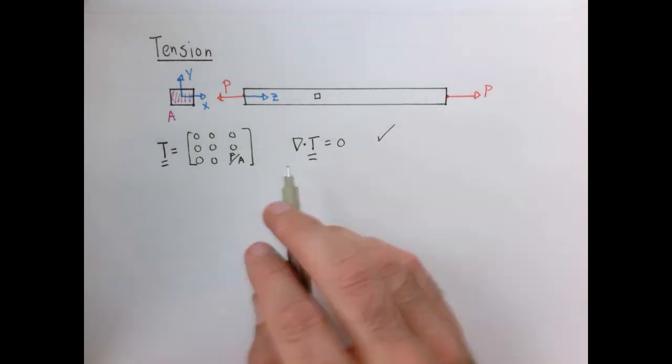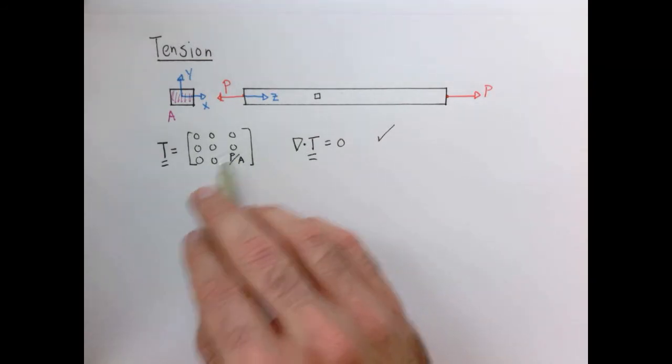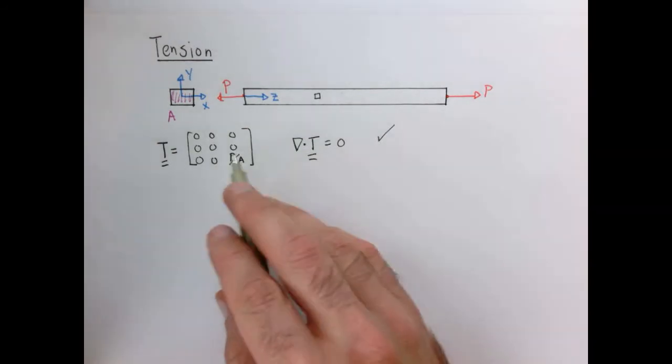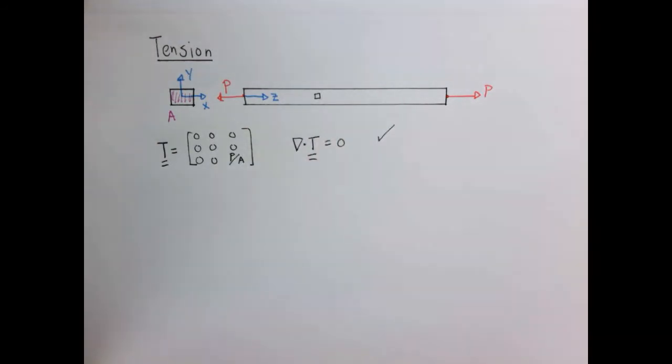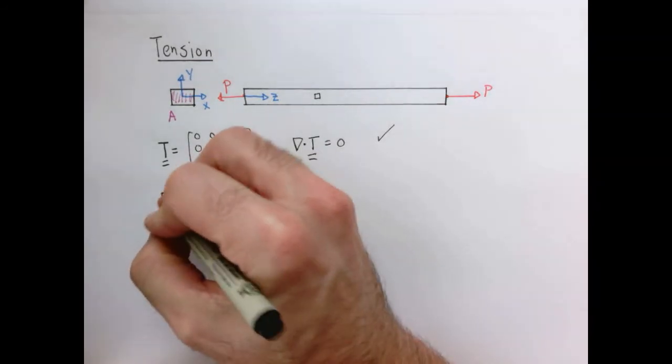I'm also going to satisfy our symmetry argument because this tensor is symmetric. So therefore, at every point in space, sum of the moments equals zero. So now let's use our constitutive law to write out what the strain tensor would be in this case.